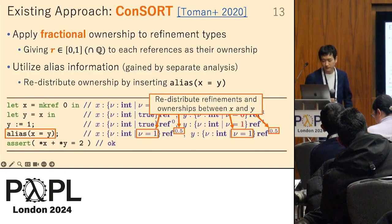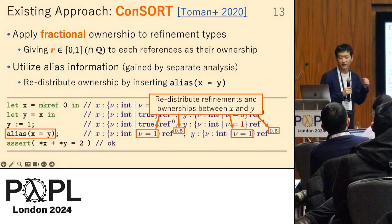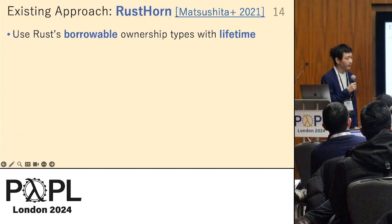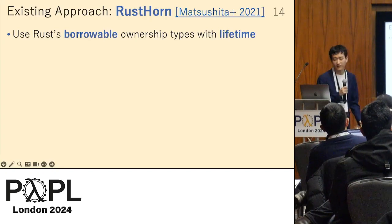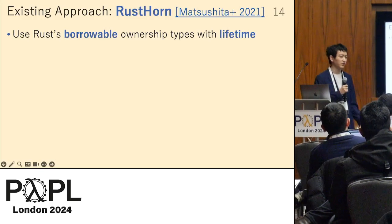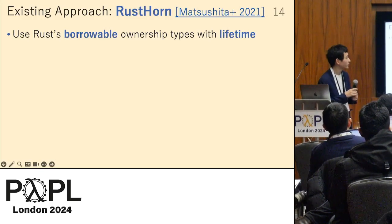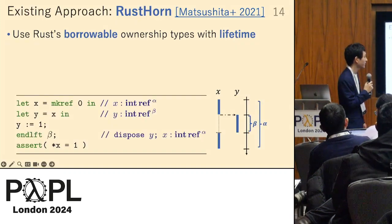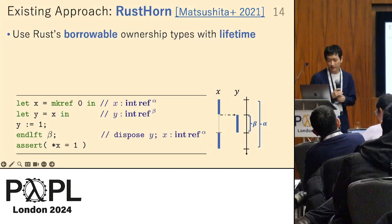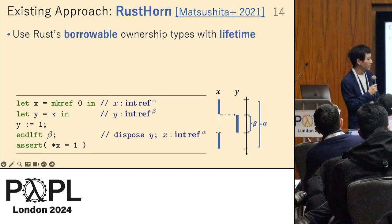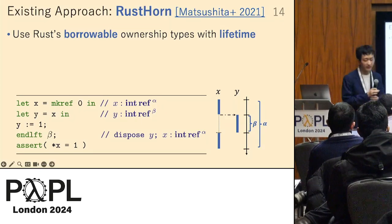The other approach is RustHorn, a verification method for the Rust programming language, which has a unique ownership type called borrowable ownership with lifetime. In the Rust type system, the reference type is endowed with a lifetime, indicated by alpha or beta.